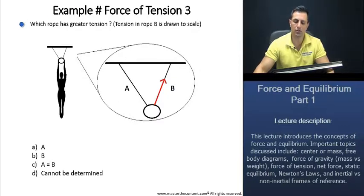Which rope has greater tension? Tension in rope B is drawn to scale. Is it going to be rope A, rope B? Is the tension in rope A and B equal, or can it not be determined?